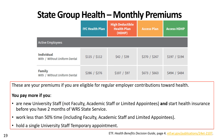Here are the monthly premiums for each of the state group health plans. The table shows individual and family options with or without uniform dental. These are your premiums if you are eligible for regular employer contributions toward health. You pay more if you are new university staff and start health insurance before having two months of WRS state service, work less than 50% time, or hold a single university staff temporary appointment.